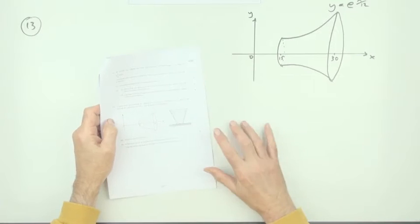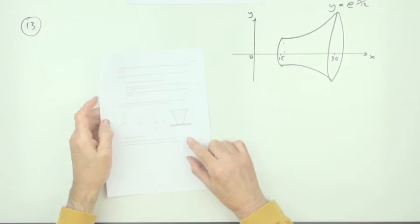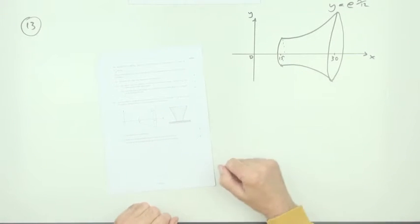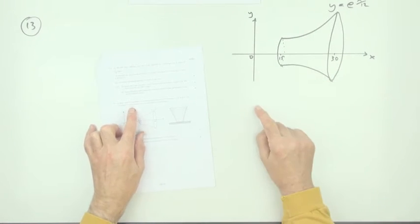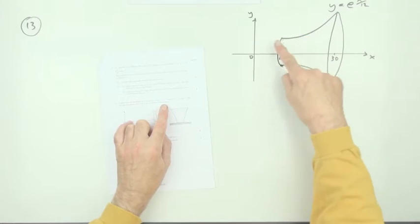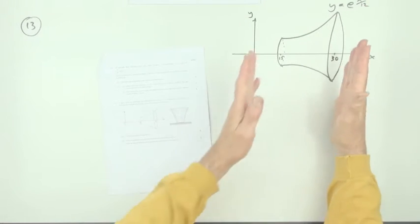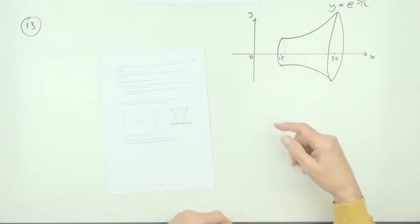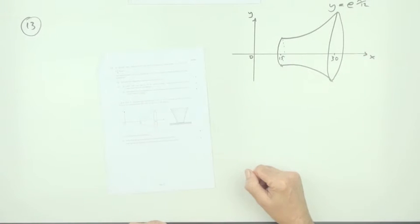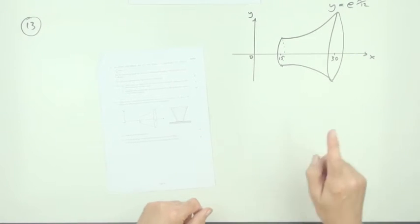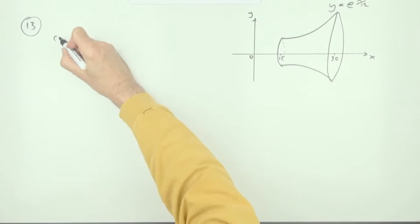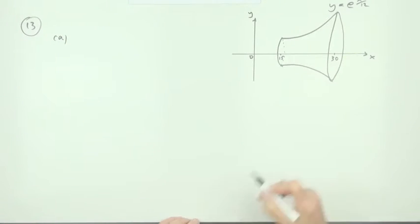Number 13 from the 2016 Advanced Mathematics exam. It's a volume of solid of revolution problem. It says a glass bowl is modeled by rotating this curve e to the power x upon 12 between x is 15 and x is 30, generating that solid of revolution through two pi radians, which means it's all the way around.